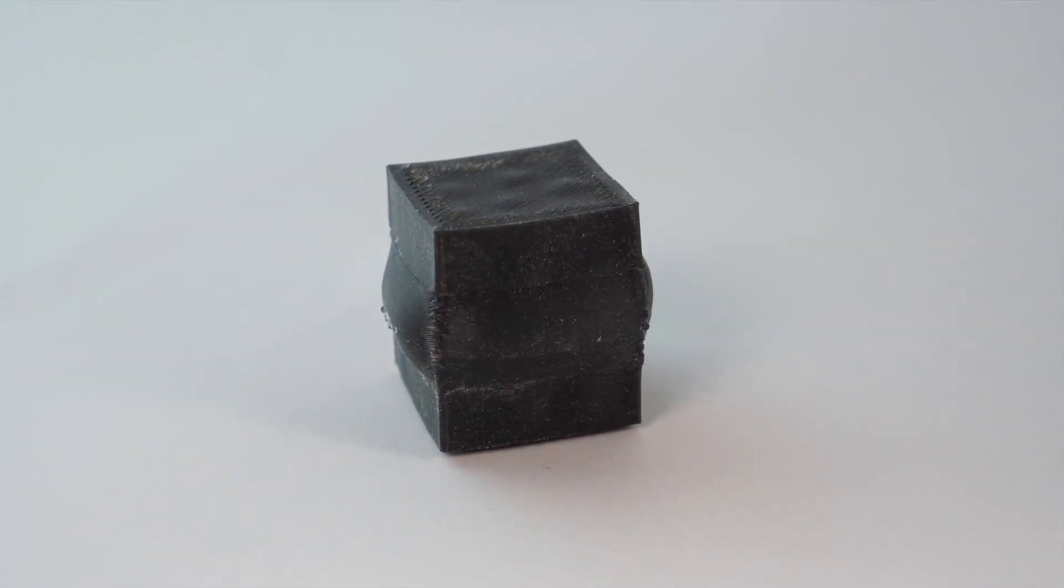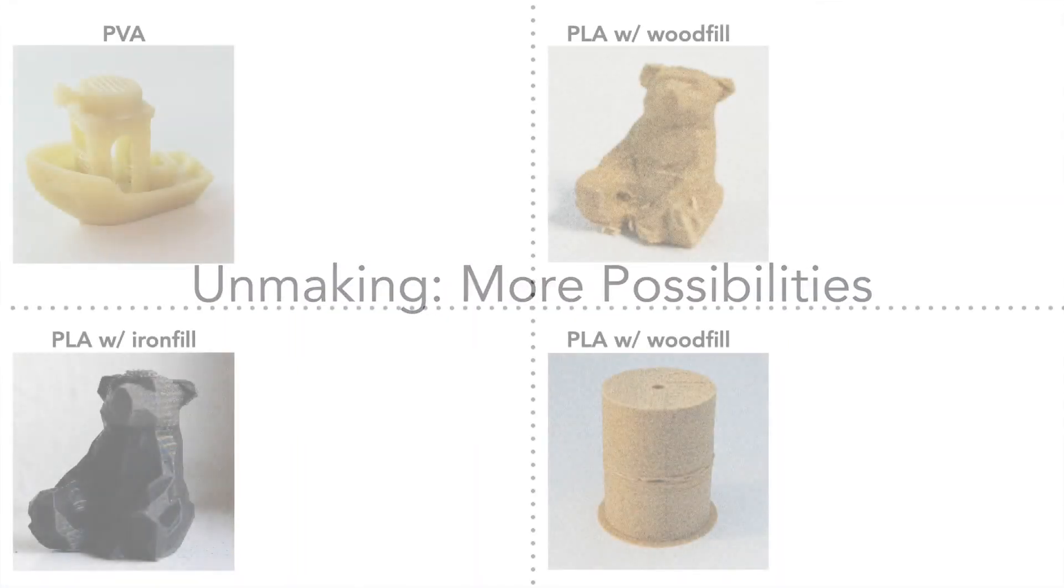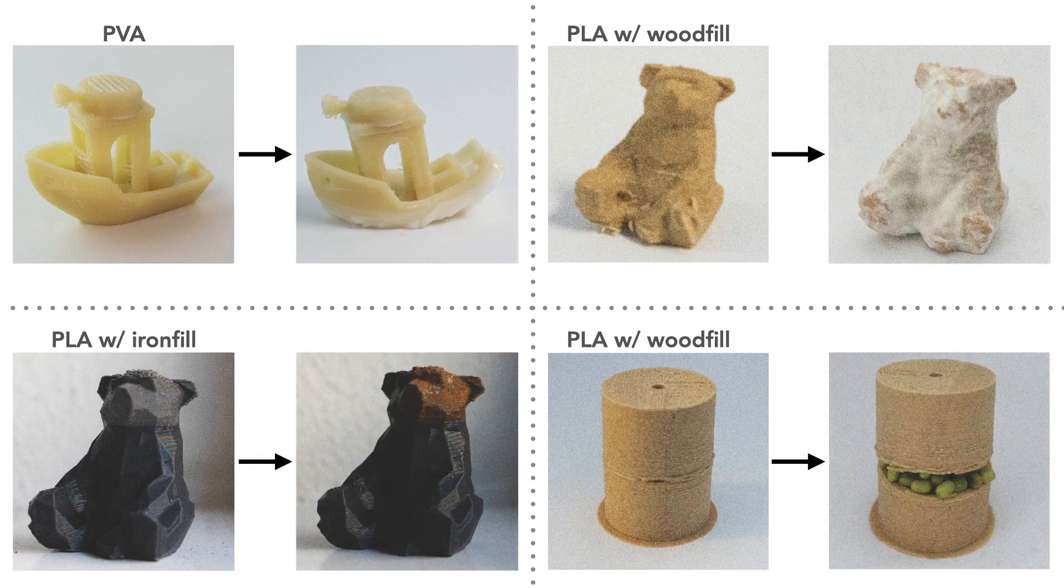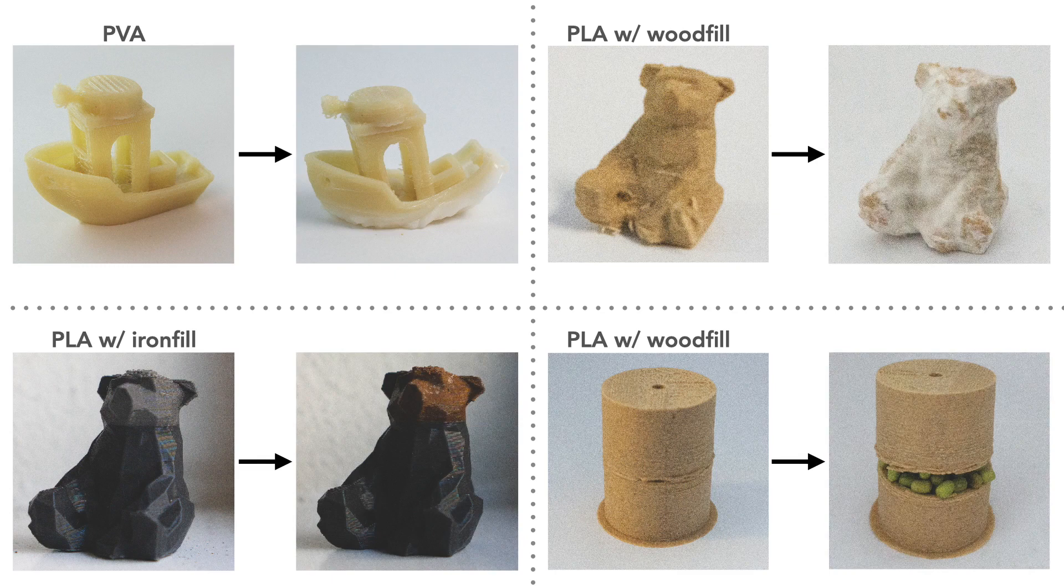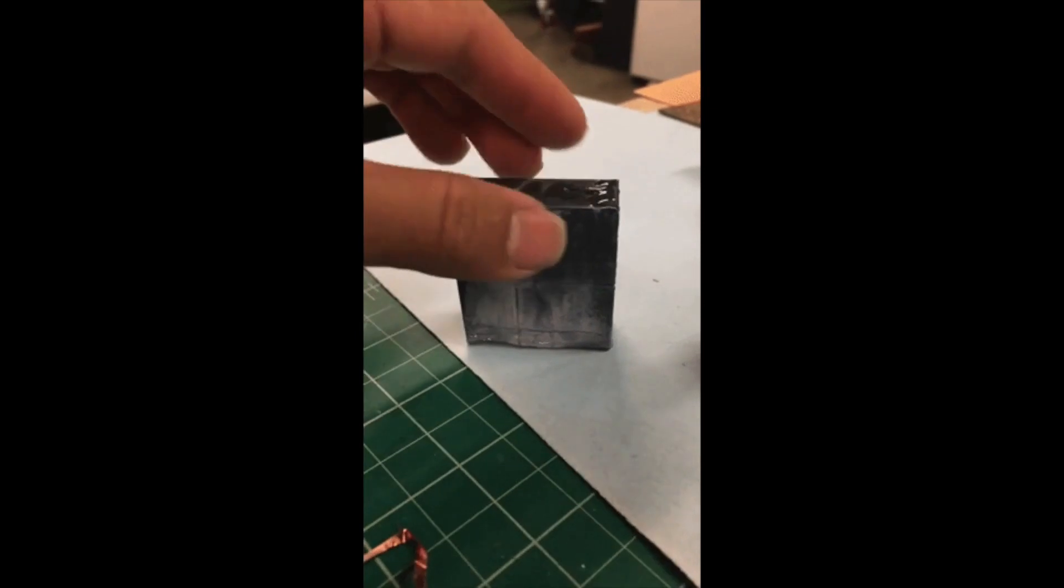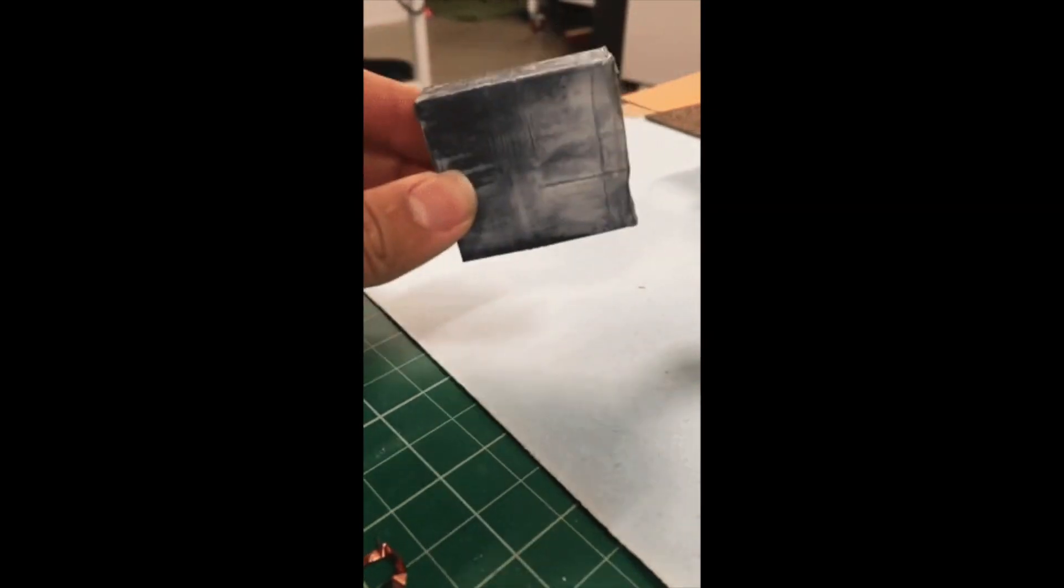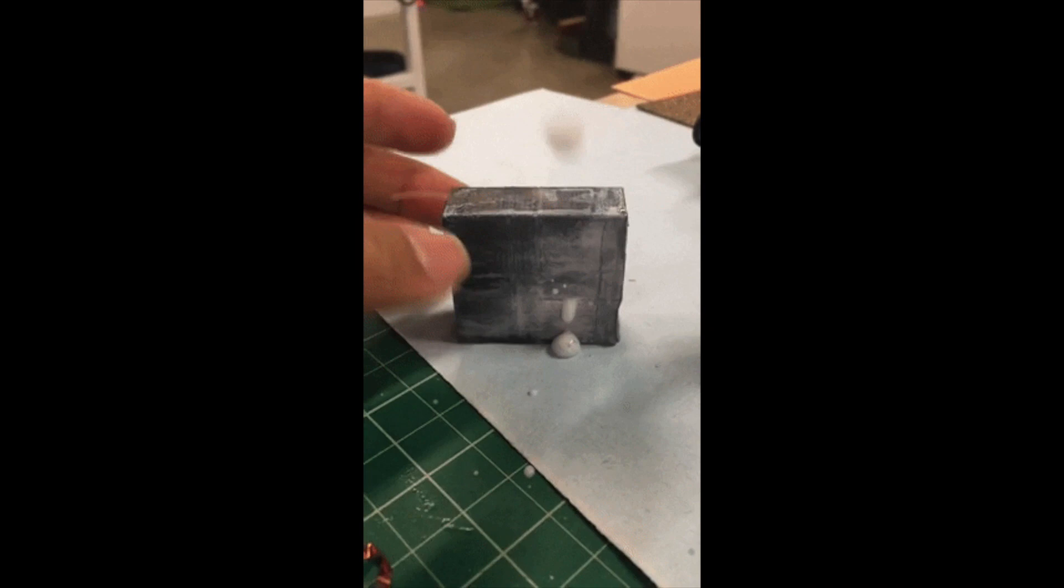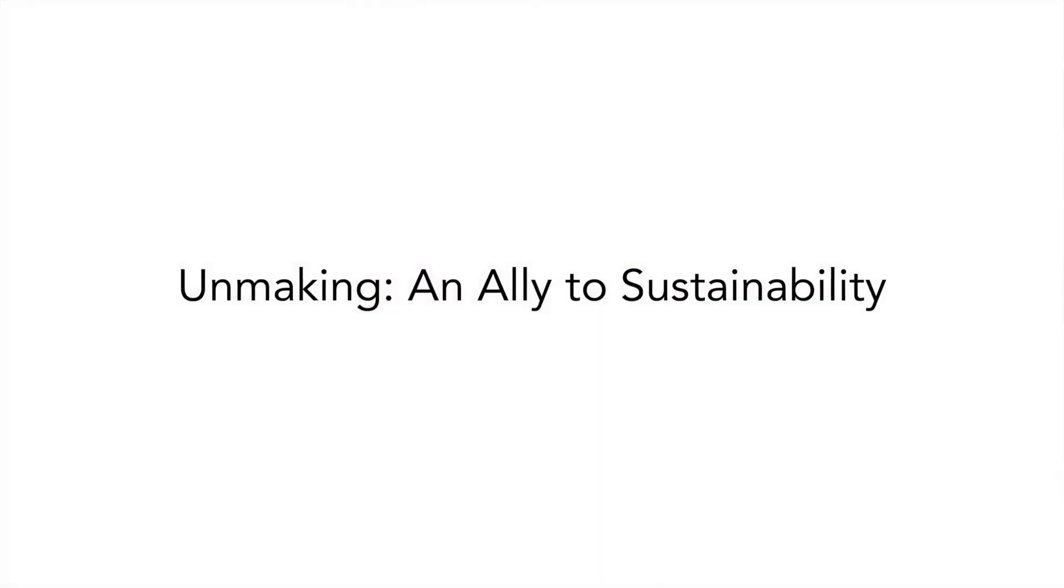This example workflow only scratches the surface of what is possible with unmaking. By combining different materials and fabrication strategies, we can design objects that have different kinds of obscured, controllable unmaking potential that is realized post-making. A designer may even build in hidden chambers of reactive materials that internally combine and trigger unmaking when an object is handled in a particular way. In addition to creating these unconventional aesthetics and new kinds of experiences with digitally fabricated objects...